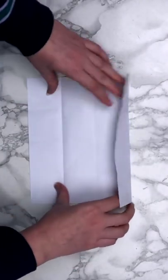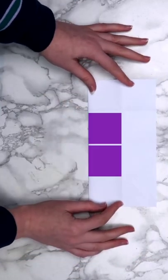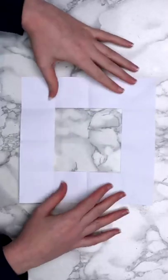When you're done, your paper should look like this. Fold the paper in half again, and cut out these two squares. Open it up, and here's what it should look like.